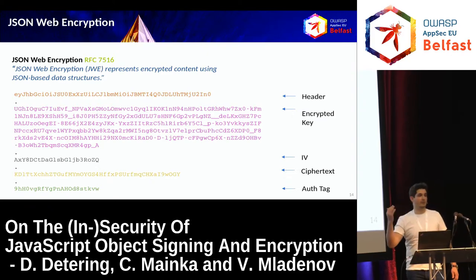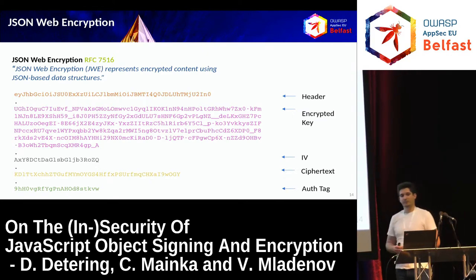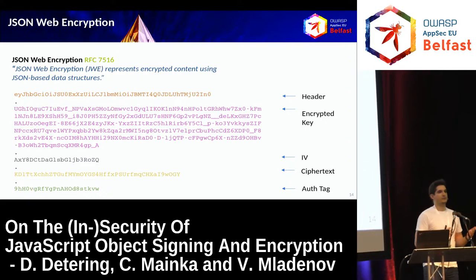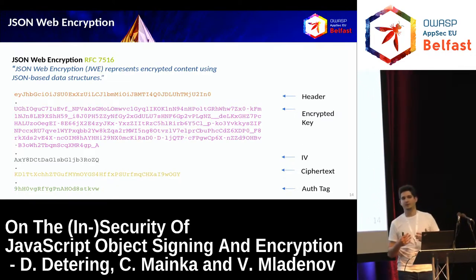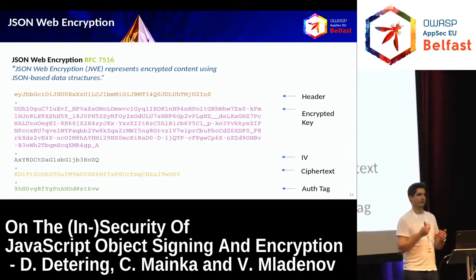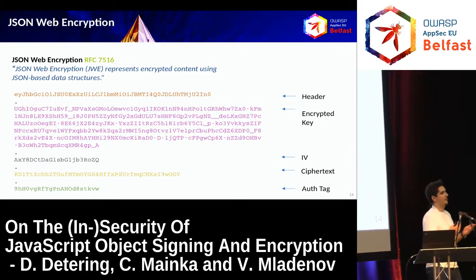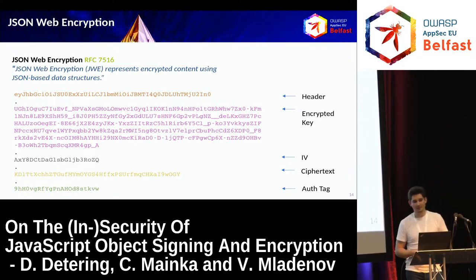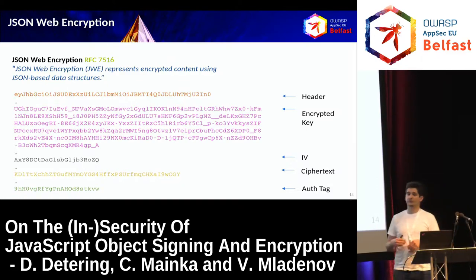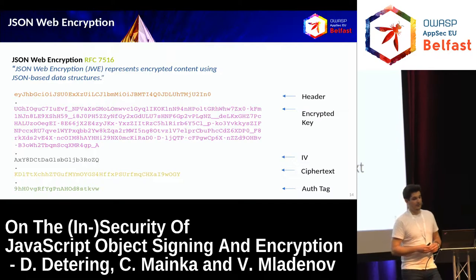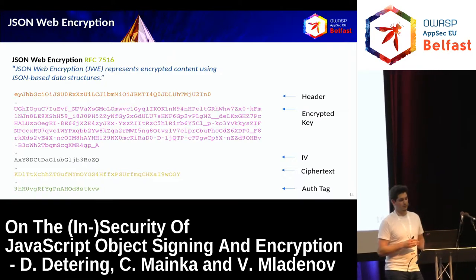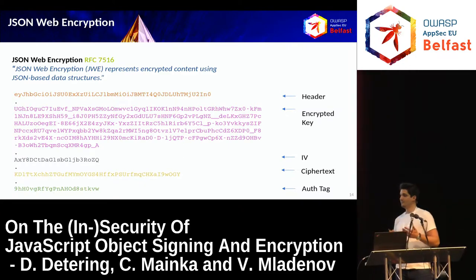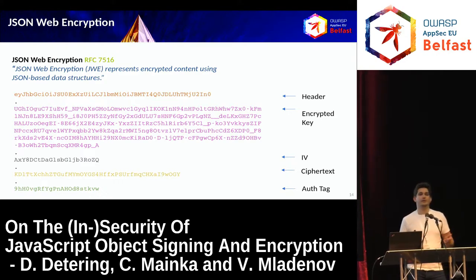The five parts are: the header with all cryptographic information; the encrypted key, also known as the session key or content encryption key. You use a symmetric key for the actual encryption and your asymmetric key to transport the symmetric key securely. The third part is the initialization vector if needed for your selected algorithm. Then comes the ciphertext, and in certain algorithms we also have the authentication tag, providing additional integrity protection for authenticated encryption.